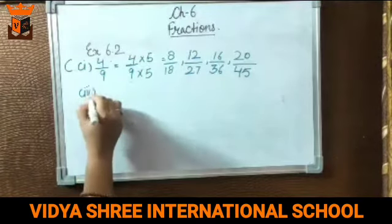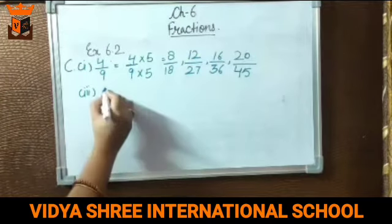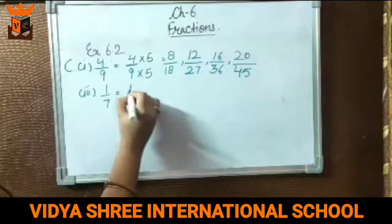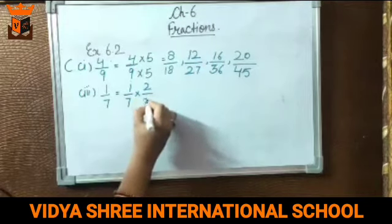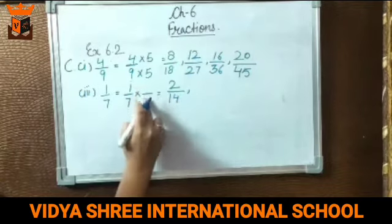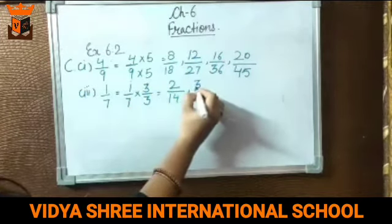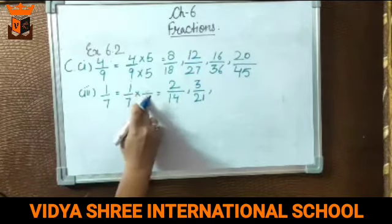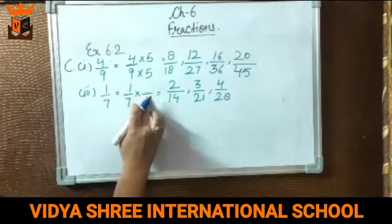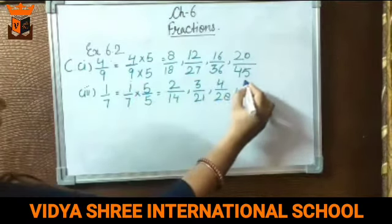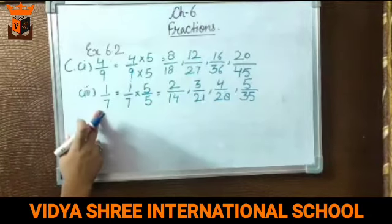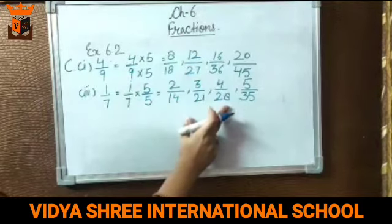Question number 3 of part C: the fraction is 1 by 7. We'll start with 2. Multiply 1 by 7 by 2: 2 ones are 2 and 7 twos are 14, giving 2 by 14. Multiply by 3: 3 ones are 3 and 7 threes are 21, giving 3 by 21. Multiply by 4: 4 ones are 4 and 7 fours are 28, giving 4 by 28. Multiply by 5: 5 ones are 5 and 7 fives are 35, giving 5 by 35. So the 4 next equivalent fractions of 1 by 7 are 2 by 14, 3 by 21, 4 by 28, and 5 by 35.